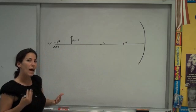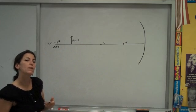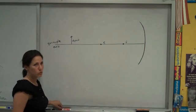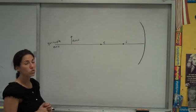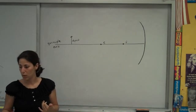And I want you to use ray diagrams to try and figure out where the image of this object will be and what its characteristics are. There are a whole bunch of rules you can use. I like to use two or three of the most simple rules to try and find where an image is located.